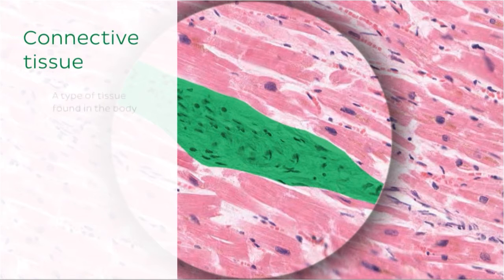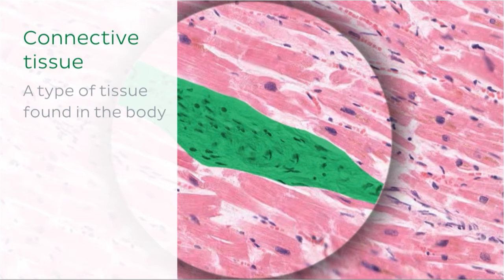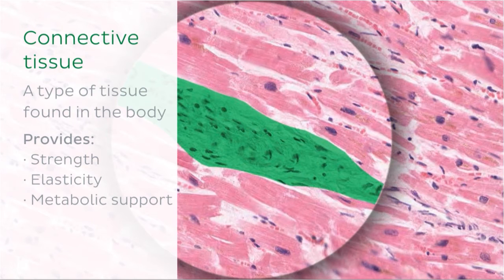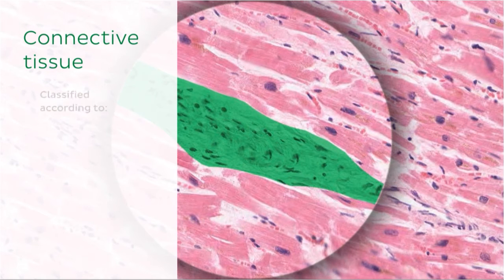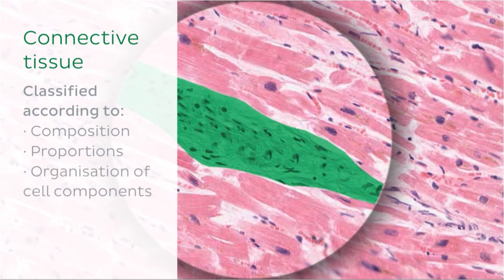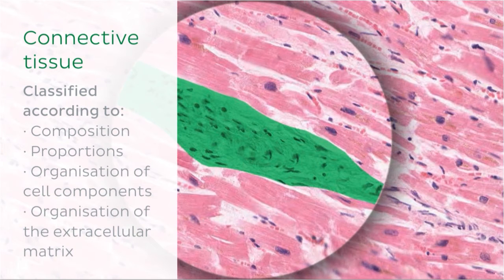Connective tissue is a type of tissue found in the body that's located at virtually every site, both internally and externally. It's important because it provides strength, elasticity and metabolic support to all other tissues of the human body. Connective tissue can be classified according to the composition, proportions and organisation of its cell components, as well as the organisation of its extracellular matrix.